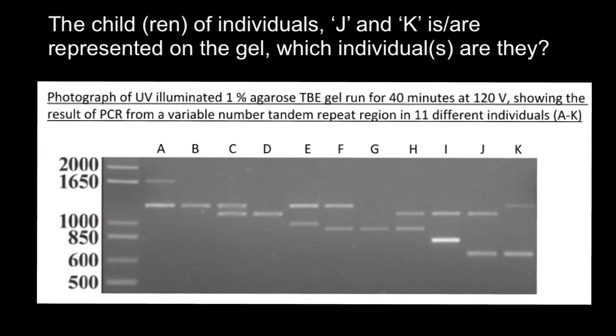Hello and welcome to Nikolai's genetics lessons. Today is going to be another video in which I am explaining how to understand and read results of gel electrophoresis. I highly recommend watching my previous videos so you would be able to solve this problem without my help. Here is the problem: the child or children of individuals J and K is or are represented on this gel - which individuals are they?